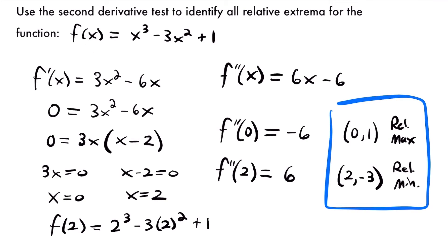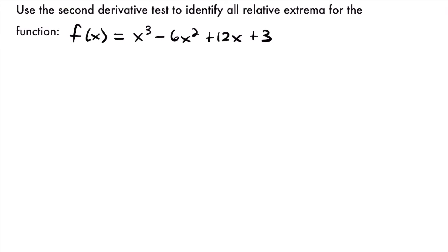Let's look at one more example for this lesson. We're going to use the second derivative test to identify all the relative extrema for the function f(x) = x³ - 6x² + 12x + 3. Just like we did in our last example, we're going to start by finding the critical values of our function, which comes from setting the first derivative equal to zero, not the second derivative.